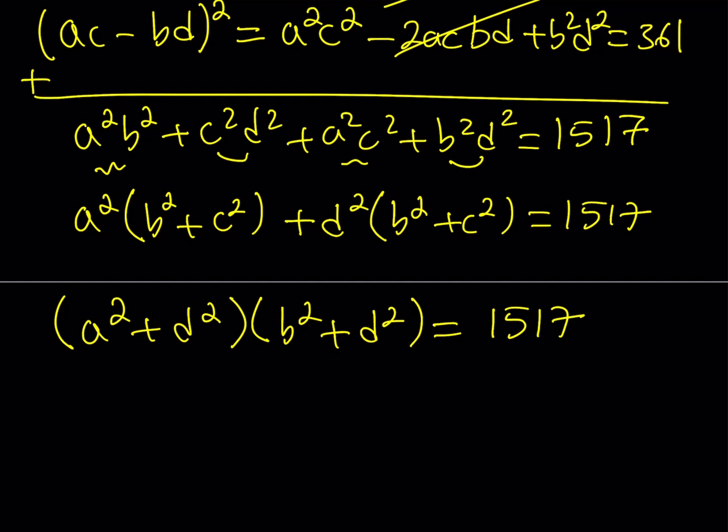What is so cool about factoring is that it's easier to solve if you're looking for integer solutions and the expression is factored. So this turns into (A² + D²)(B² + C²) = 1517. Now, this is critical.